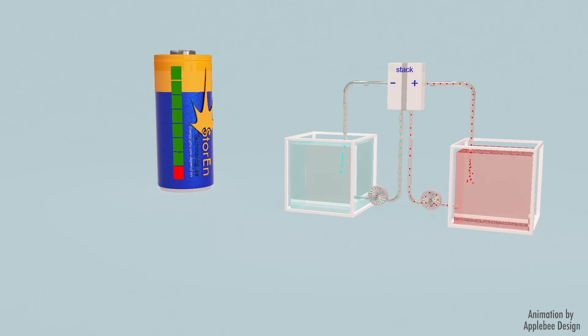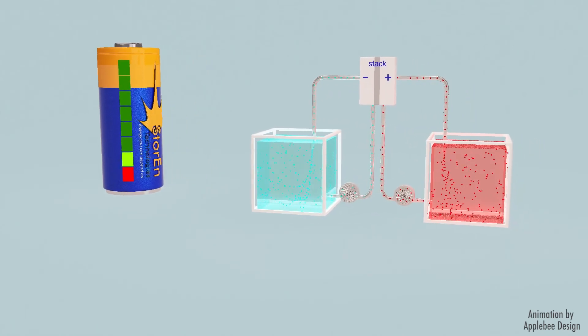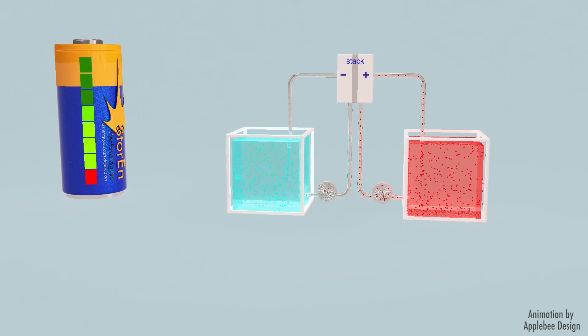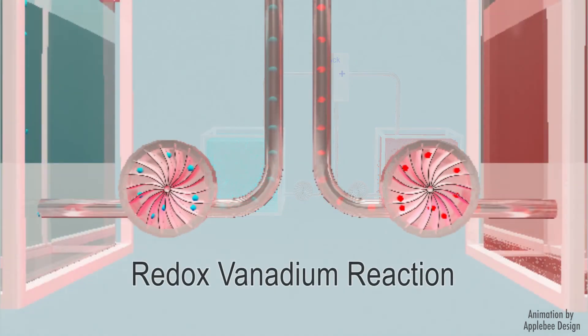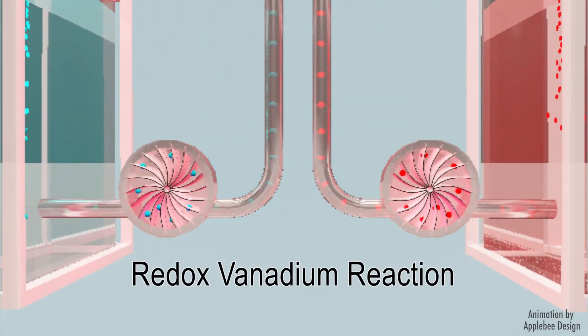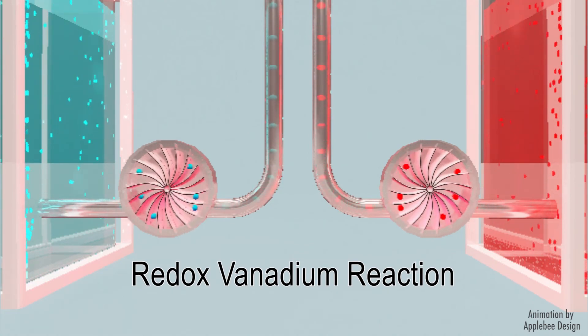In a vanadium flow battery, we find two tanks of electrolyte solution, one positive and one negative, with a charging-discharging cell stack between them. Two pumps make the negative electrolytes and the positive electrolytes flow through the cell stack, where a thin proton exchange membrane prevents the two electrolyte solutions from mixing together.